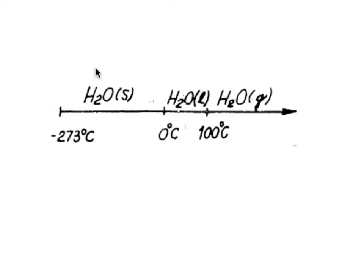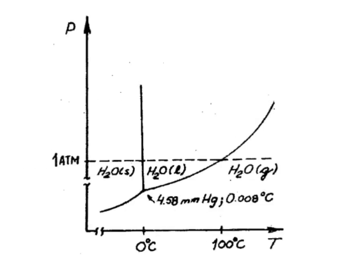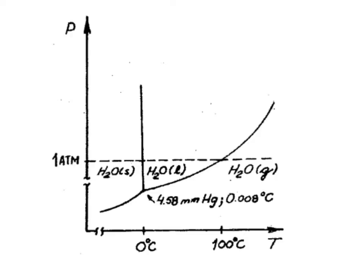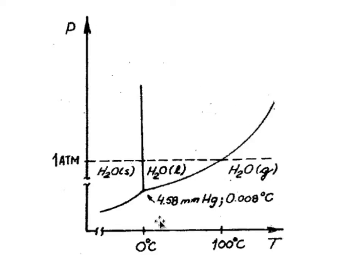If we add a pressure axis to this system, we get a diagram with a pressure axis and a temperature axis. At the pressure of one atmosphere we get the same line as before, with the two phase transition points we recognized. But now the different phases exist as areas in the pressure-temperature field: the solid phase in one area, the liquid water in another area, and the gas in a third area.